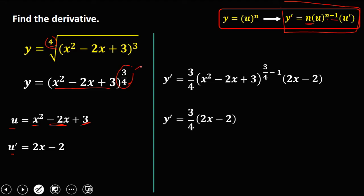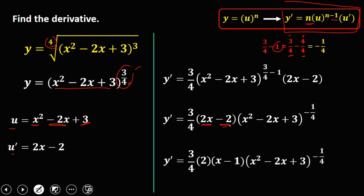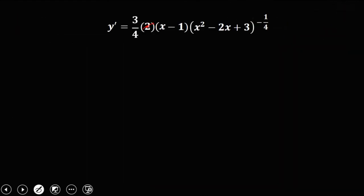Then times u prime, which is 2x minus 2. Simplify: 3/4 times (2x minus 2). For the exponent, 3/4 minus 1 — rewrite 1 as 4/4 — so 3/4 minus 4/4 equals negative 1/4. So we have (x squared minus 2x plus 3) to the power negative 1/4. We can simplify: 3/4 times 2 gives 3/2, so we get (3/2)(x minus 1)(x squared minus 2x plus 3) to the power negative 1/4.